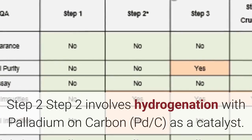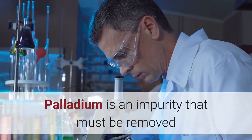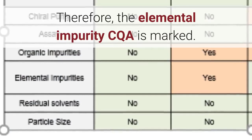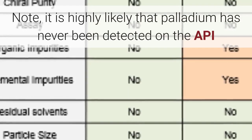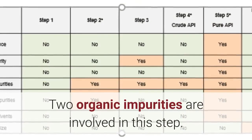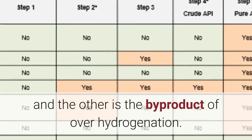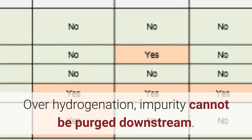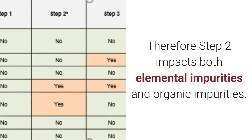Step 2 involves hydrogenation with palladium on carbon as a catalyst. Palladium is an impurity that must be removed and is part of the elemental analysis on the API per ICH Q3D. Therefore, the elemental impurity CQA is marked. It is highly likely that palladium has never been detected on the API, but it is listed as impacting the CQA because it will be on the final specification. Two organic impurities are involved in this step: the first is unreacted intermediate from Step 1, and the other is the byproduct of overhydrogenation. The overhydrogenation impurity cannot be purged downstream — if formed, it will not be removed. Therefore, Step 2 impacts both elemental impurities and organic impurities.